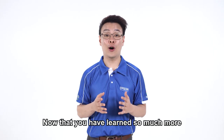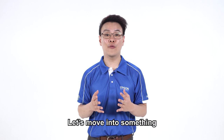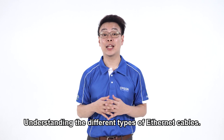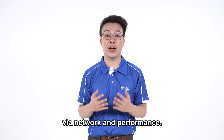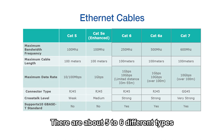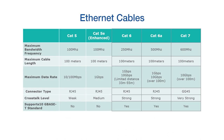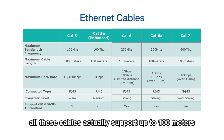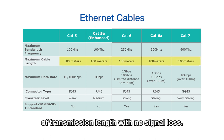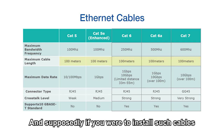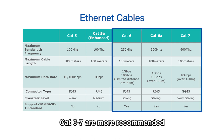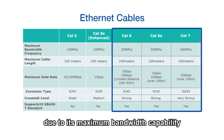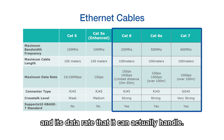Now that you have learned about the different types of cables and connectors, let's move into something a little more advanced: understanding the different types of Ethernet cables. The type of Ethernet cable chosen for your projection affects your projection speed via network and performance. There are about five to six different types of Ethernet cables in the market. In general, all these cables support up to 100 meters of transmission length with no signal loss. If you were to install cables for 4K quality projection, CAT 6 to 7 are more recommended due to their maximum bandwidth capability and data rate.